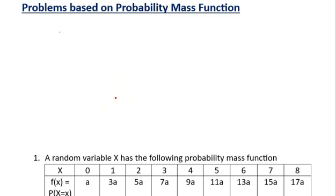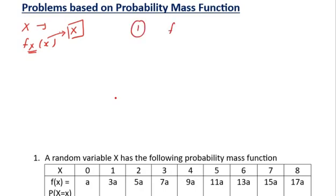The examples are based on the probability mass function. If x is a discrete random variable, we use the function defined as f_X(x), where capital X is a random variable and small x represents the values that X can take. For the probability mass function, the first necessary and sufficient condition is that the probabilities f_X(x), defined as P(X = x), must always be greater than or equal to 0 for all defined values of x.